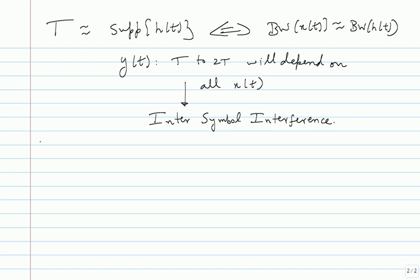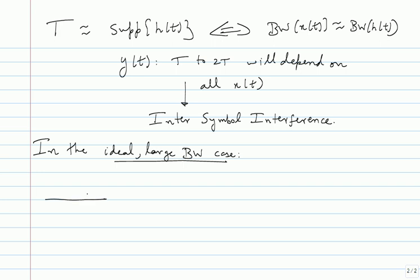This is an illustration for continuous operation in the ideal large-bandwidth case. Suppose I have a sequence of n-bit vectors: b_0, b_1, all the way to b_{L−1}. This is n × L bits total, grouped n bits at a time. I map each group to a symbol in the constellation.